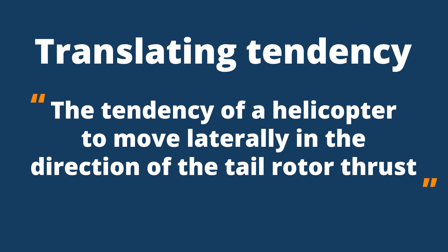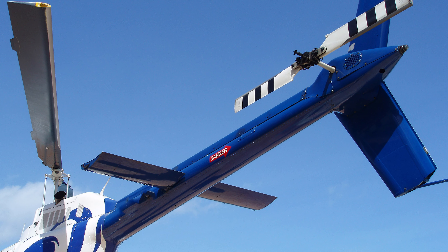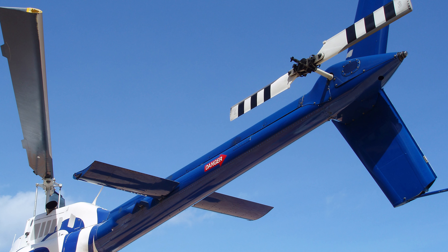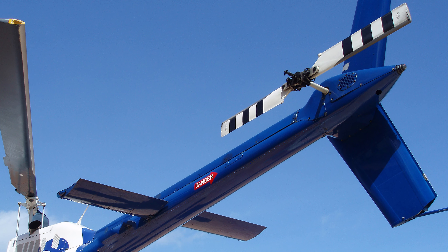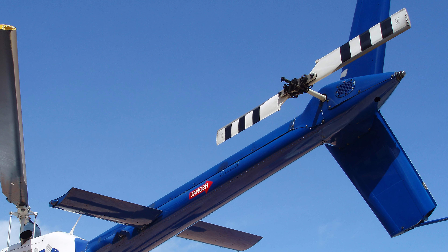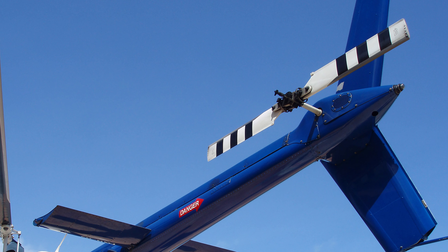The tendency of a helicopter to move laterally in the direction of the tail rotor thrust. The tail rotor is a necessity for a helicopter with a single main rotor system. It does, however, come with a couple of flaws that we'll take a quick look at.